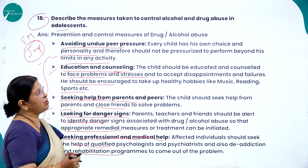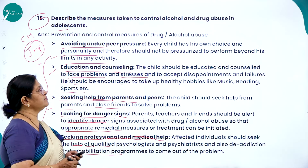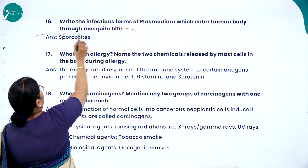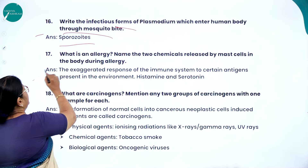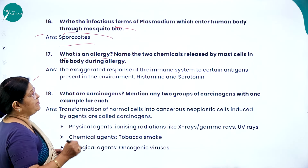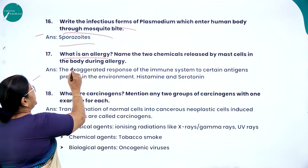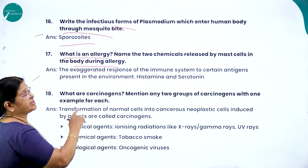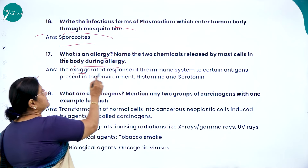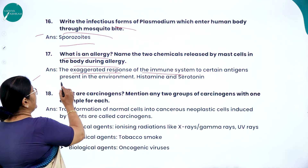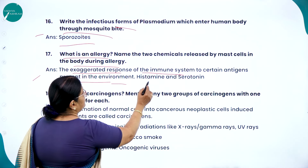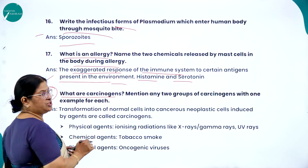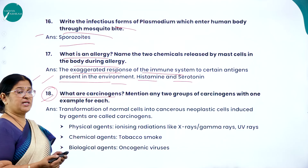The infectious form of Plasmodium which enters the human body through mosquito bites is called sporozoites. What is allergy, and name the two chemicals released by mast cells during allergy? The exaggerated response of the immune system to certain antigens present in the environment is called allergy. The two chemicals released by mast cells during allergy are histamine and serotonin.